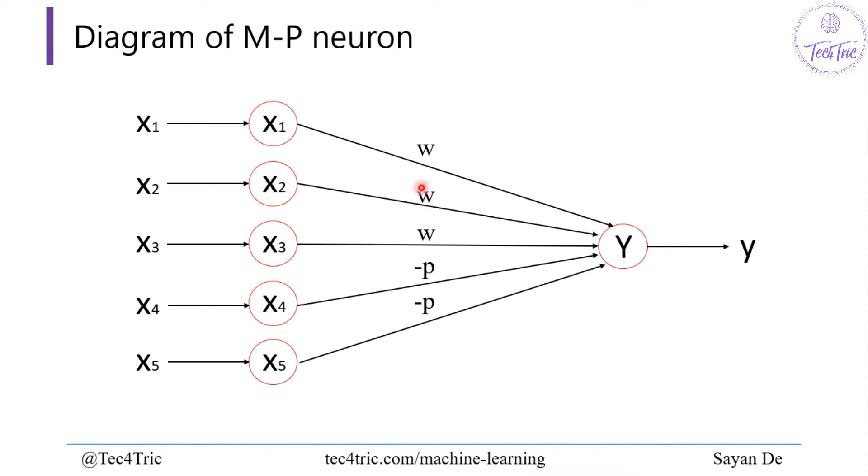Let us see the diagram of McCulloch-Pitts Neuron. This is the basic diagram where x1, x2, x3, x4, x5 up to xn are the inputs, and this is the output layer. w and minus p are the weights associated to these inputs. See, this is only one direction from input to output, only feed forward.